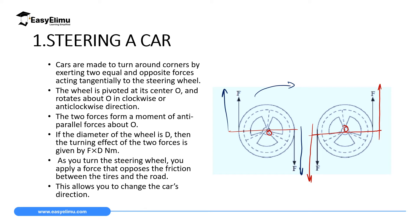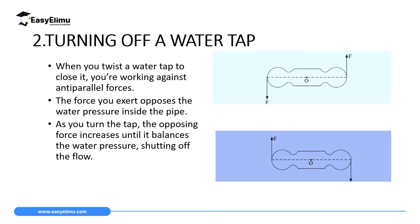To calculate the moment created, if you know the diameter of the steering wheel from one side to the other, you multiply one of the forces F by the diameter of the steering wheel, and you get the moment in newton meters. This allows a car to change direction — applying equal and opposite forces in the clockwise direction turns the car one way, and applying them in the anti-clockwise direction turns it the other way.